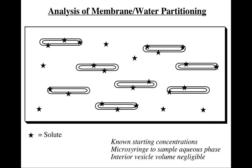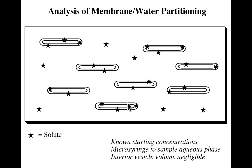Now let's do something more exotic: membrane-water partitioning, which gets closer to the pharmaceutical application I mentioned. How do you actually measure this experimentally? Typically you prepare vesicles in aqueous solution, making them so that their interior volume is negligible, then toss in a solute and the solute partitions — some is in the water, some is in the vesicle. With a microsyringe you sample the aqueous phase, and knowing how much you put in and the concentration in the water phase, you can determine the remaining concentration in the vesicle phase. As long as you know the volume of your vesicles, you have an equilibrium constant and can define a free energy.